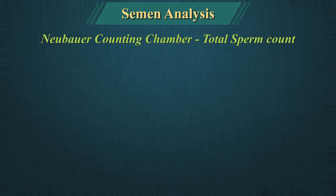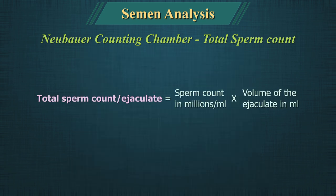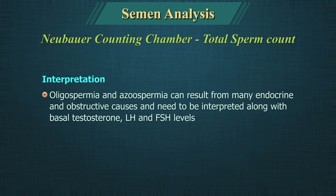Therefore, the total sperm count equals the sperm count in millions per ml multiplied by the total volume of ejaculate in milliliters. Oligospermia and azoospermia can result from many endocrine and obstructive causes and need to be interpreted along with basal testosterone, luteinizing hormone and follicle-stimulating hormone levels.